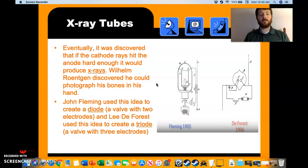When it was discovered that if cathode rays hit the anode hard enough, it'd produce x-rays. And this guy named William Roentgen, and he's a German guy, he discovered he can photograph his hand. And these x-rays go right through his hand. Give him a great picture.